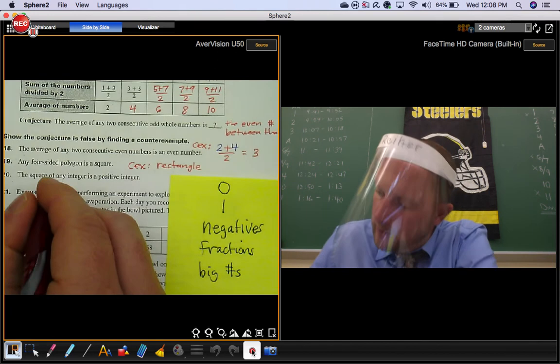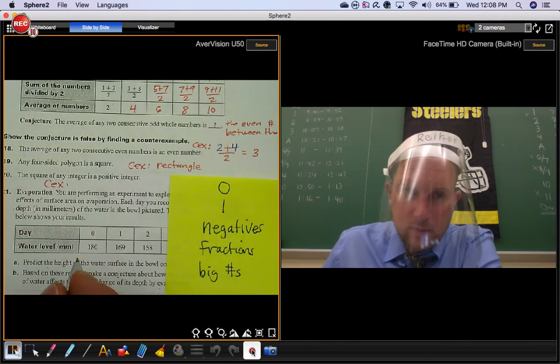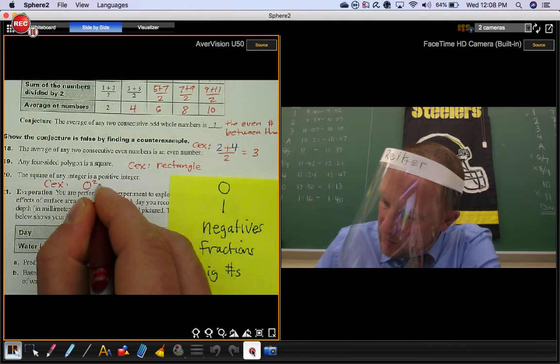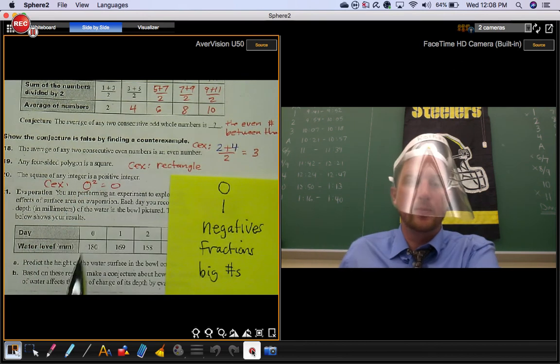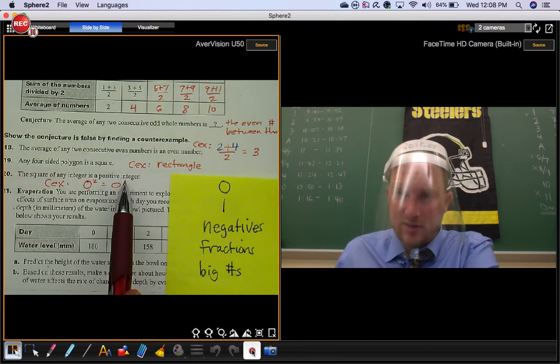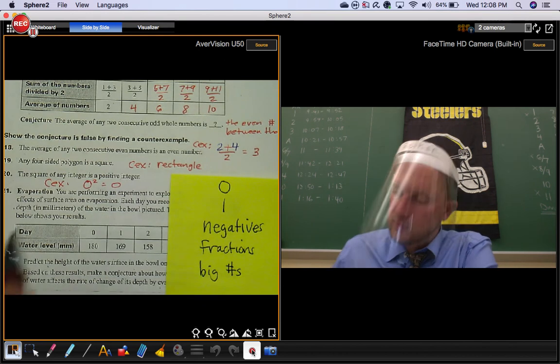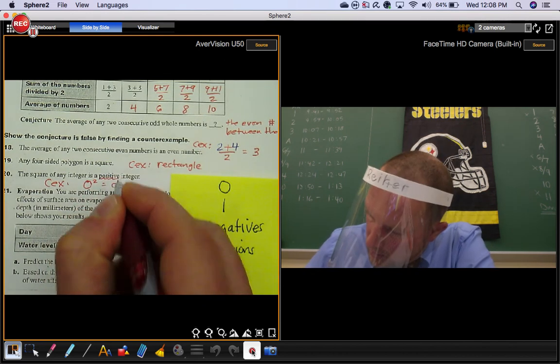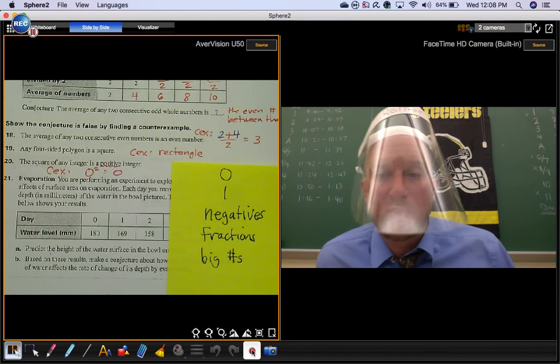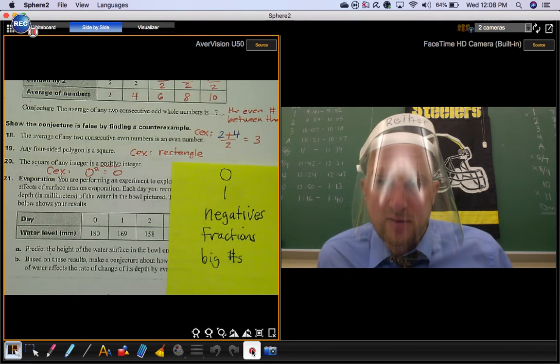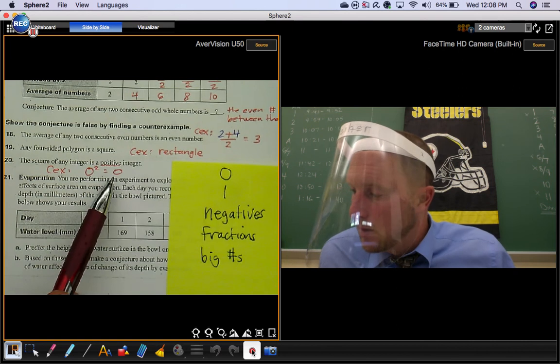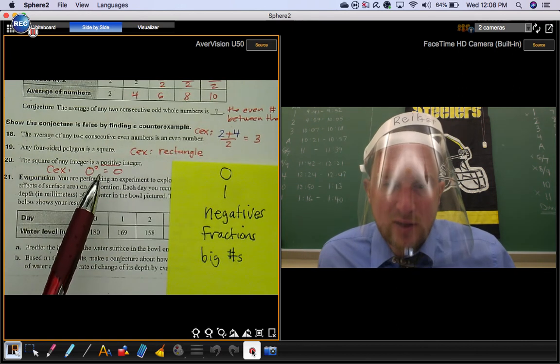But what about zero? When you square zero, you get zero. Is zero a positive integer? That's the key part right there. Zero is an integer, but it's not positive. Zero does not have a positive or a negative associated with it. It's neutral.